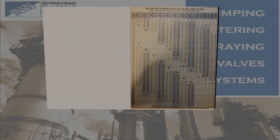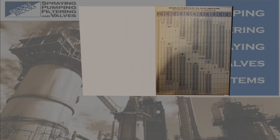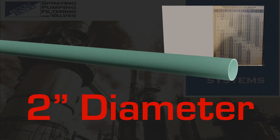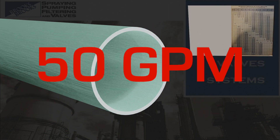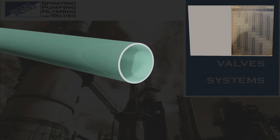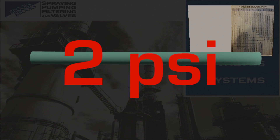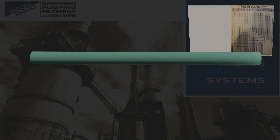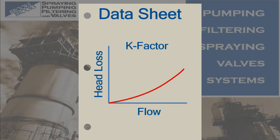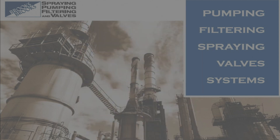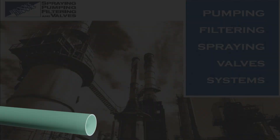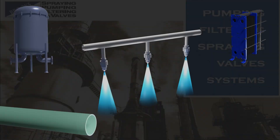By referencing commonly available tables, we can find that a 100-foot-long, two-inch diameter steel pipe with 50 gallons per minute of water flowing through it has a frictional loss of about 2 psi. As we increase this flow rate, the losses will also increase. Similar relationships can also be found for the other components in the piping system.